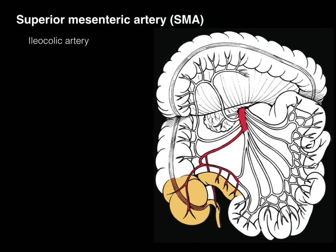Here we have the ileocolic artery — ileocolic meaning ileum and colic. Whenever you see the term 'colic,' it means colon or large intestine. Off of that there is an appendicular branch that goes to the appendix. This is an important artery to isolate during an appendectomy.